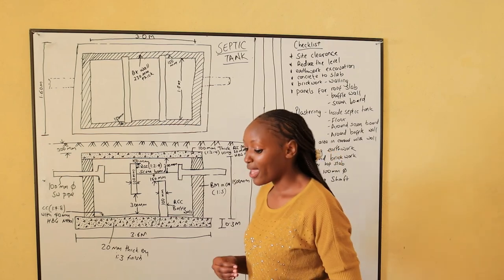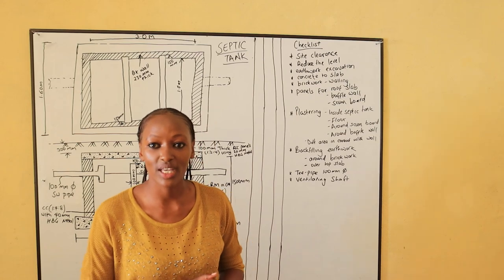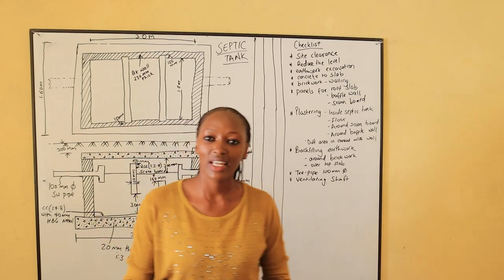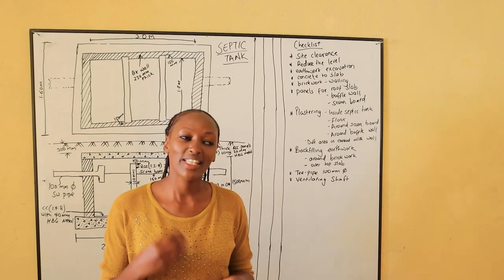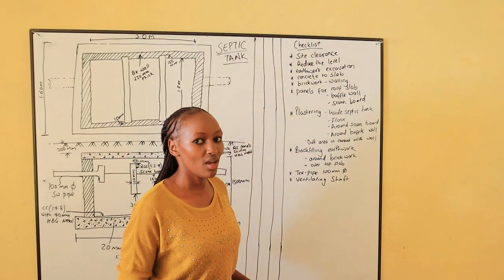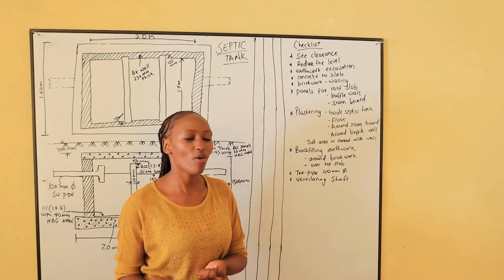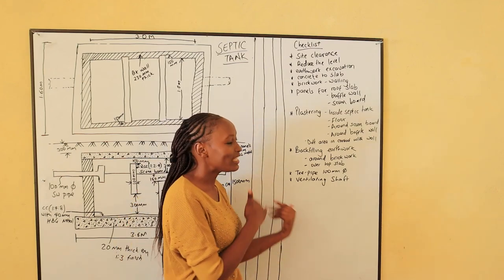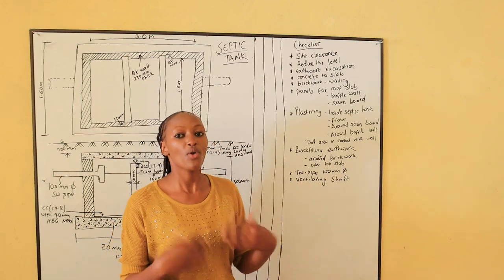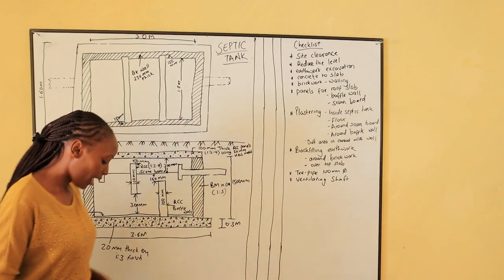The next step required before starting any takeoff is having a checklist. A checklist is the guide to help you know what you have done and what you have not done when you are taking off. It helps you remember the procedure you want to follow, so that when you start taking off you can check against it to see whether you have ticked everything. If you haven't done everything, you are not yet done taking off. Let us look at our checklist for taking off a septic tank.